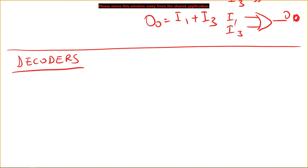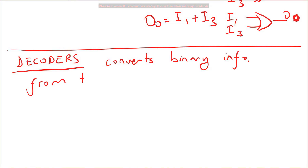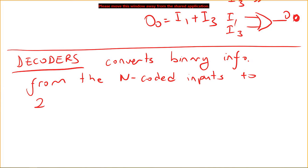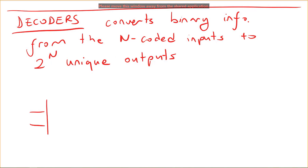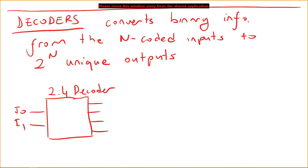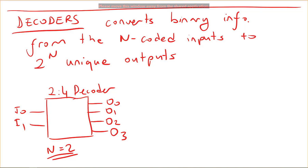Decoders do the opposite of the encoder. This is a combinational circuit that converts binary information from encoded inputs. We have n inputs and 2^n unique outputs. In this case, we have a two-to-four decoder with inputs i0 and i1, and four outputs. We have an encoded signal coming in and we are converting it to four unique outputs.